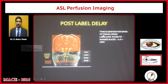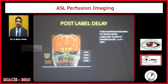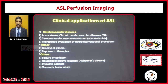The post-labeling delay is the time duration for spins to travel from the labeling plane to the imaging slices — it is normally about 1.5 to 2 seconds. After having seen what the post-label delay is and the types of ASL, let us move on to the clinical applications of ASL.